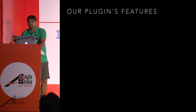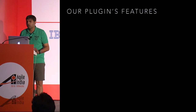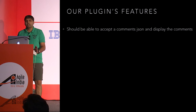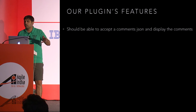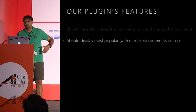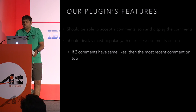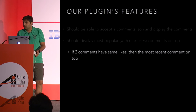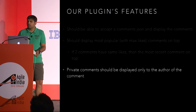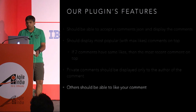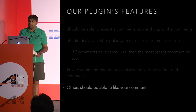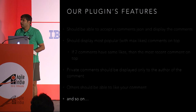Let's talk about what features this component is going to have. Simple thing is it should accept JSON and display the comments. It should be able to display the most popular comments on the top — comments with the most likes — and if two comments have the same likes, show the most recent one on top. We also have a facility for private comments, which are only visible to the person who posted them and the program committee. You should also be able to like other people's comments.